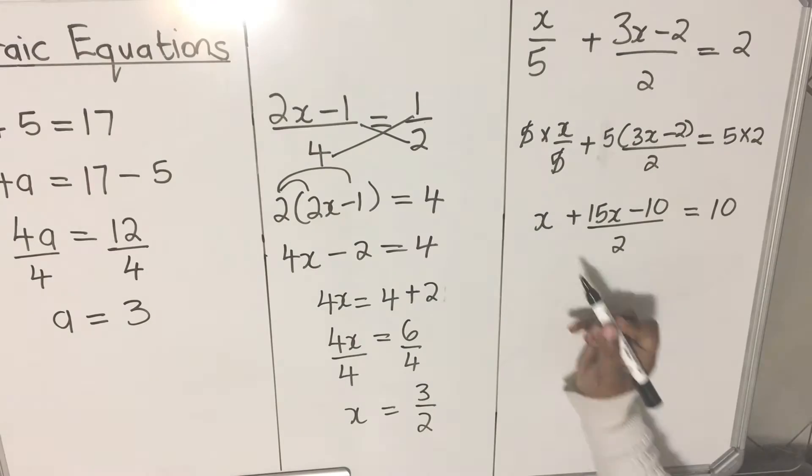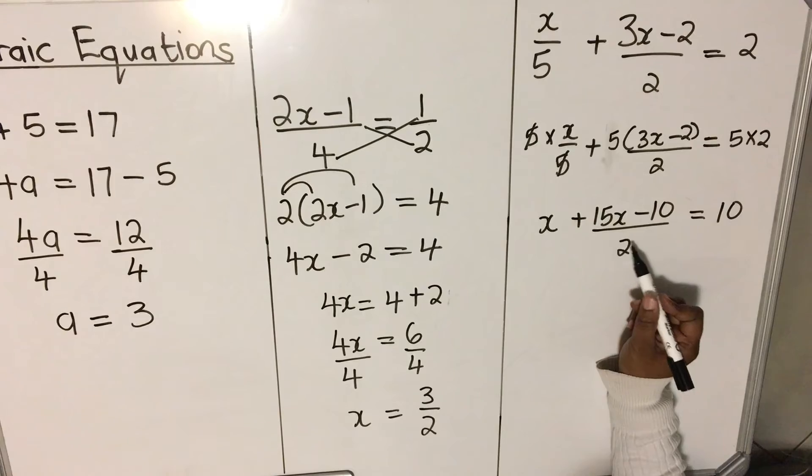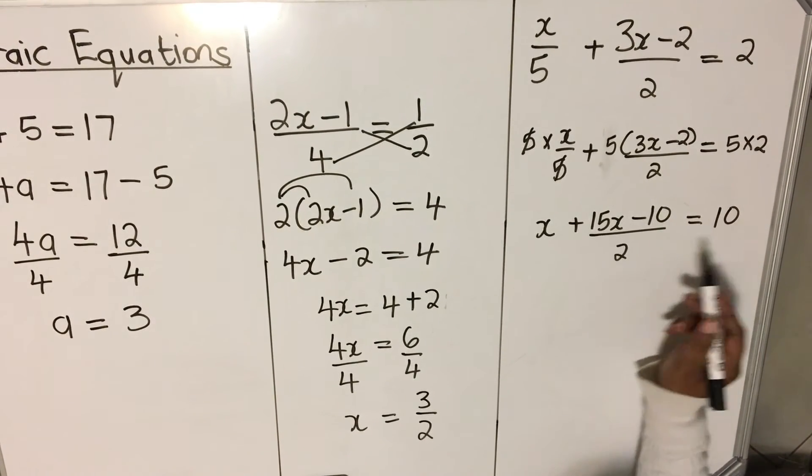Now, when we look at our equation, we have this denominator of 2. We need to get rid of the denominator of 2. How do you get rid of that? You multiply each term with a 2.